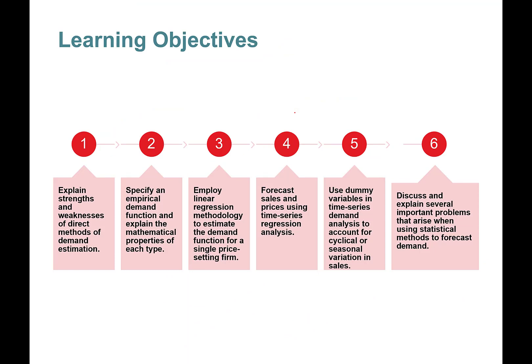Here are the learning objectives of this chapter: First, we'll learn about direct methods of demand estimation. Next, we'll learn about empirical demand functions and use linear regression methodology to estimate demand functions. We'll learn about forecasting sales and prices, how to use dummy variables, time series demand analysis to account for cyclical or seasonal variation, and at last we'll talk about some potential problems.